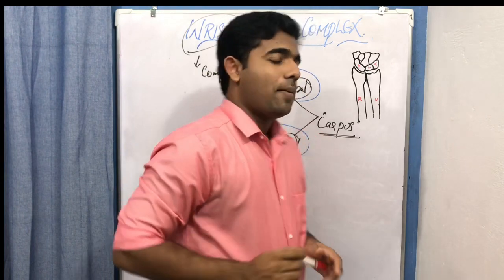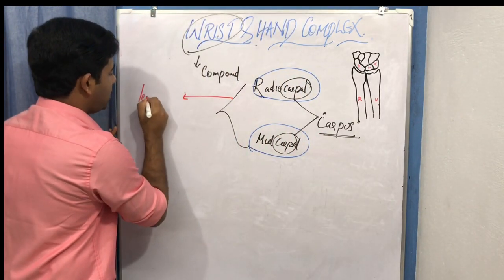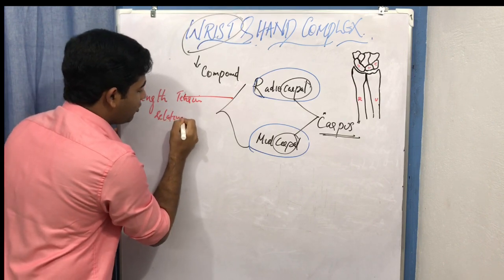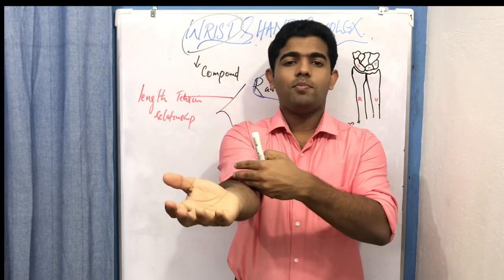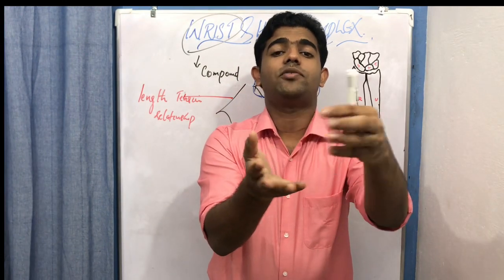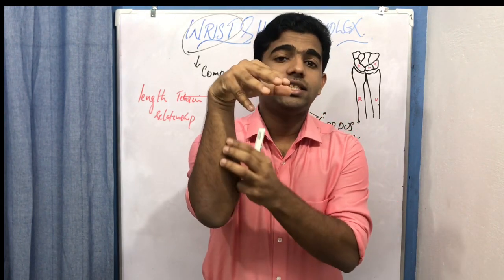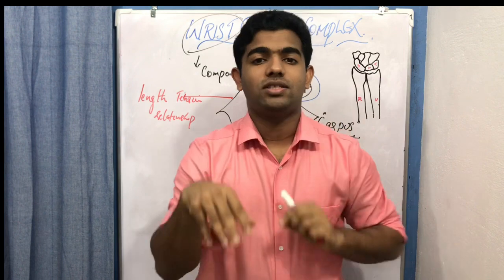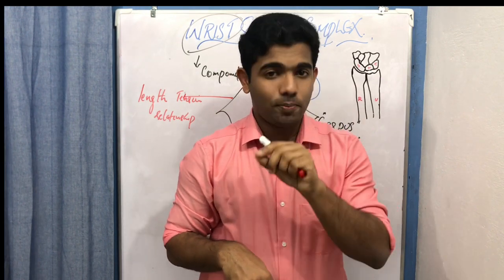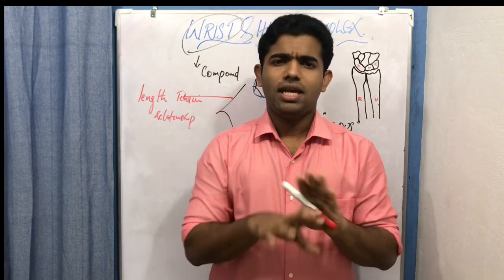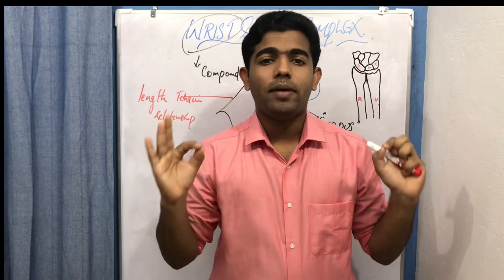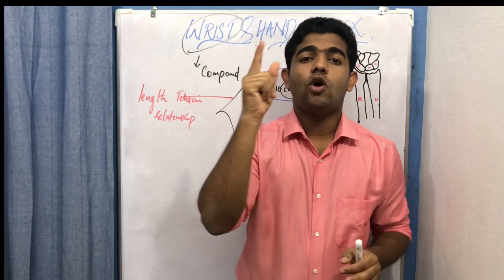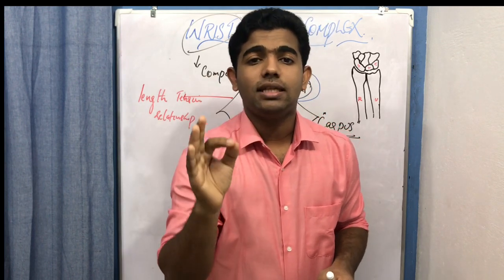The wrist complex serves one very crucial function: it maintains the length-tension relationship of the forearm muscles. The forearm flexors and extensors pass through the wrist and reach the hand. The position of the wrist determines the length-tension relationship — whether the muscle is at its full potential or whether it can generate maximum capacity. There is an optimal length when the muscle is capable of producing maximum power.